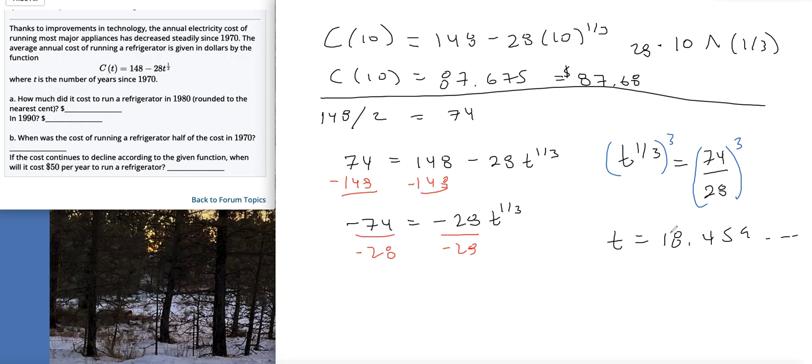So 18 years after 1970 would have been 1988, and we're a half year beyond that based on the decimal, so this means we're actually in 1989. So t equals, like, May or something in 1989. That would be the year that the cost was $74. The next part is the exact same thing except now it's a 50, so you're doing the same steps.